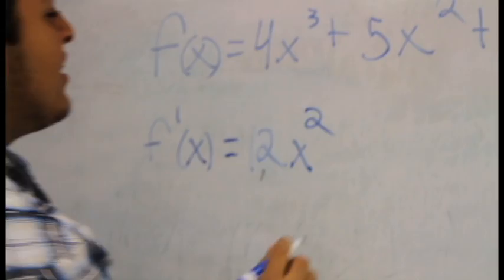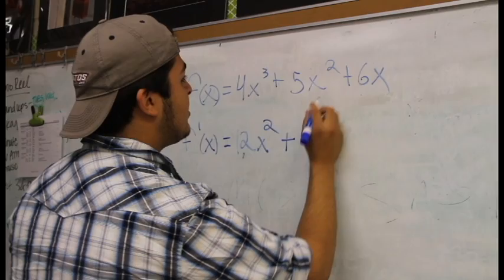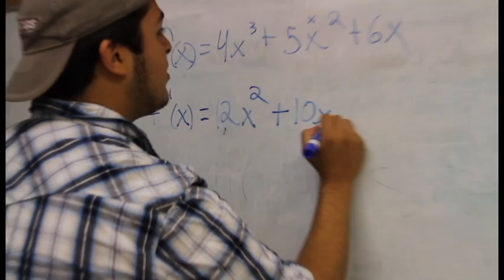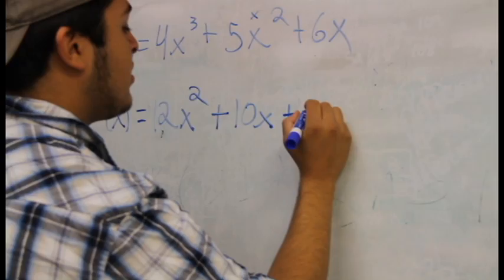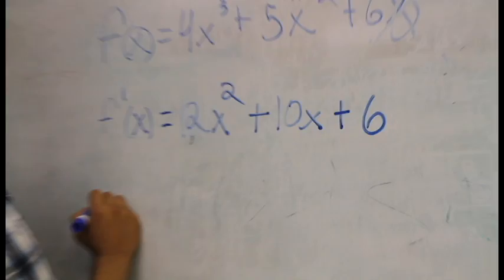Same thing for the next one: 5x squared — you multiply 2 times 5, so that will be 10x and you bring the exponent down to 1. And then for the 6x, because there's no exponent, you just completely take off the x and leave it as 6. This is your first derivative, and it equals velocity.